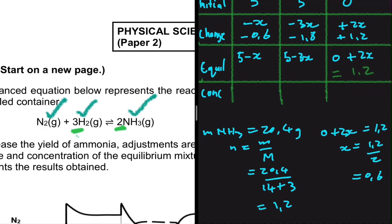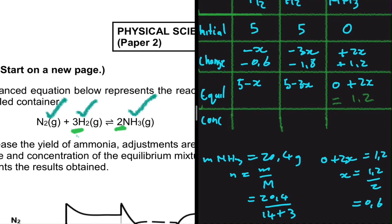So ammonia has plus 1.2, hydrogen has minus 1.8, and nitrogen has minus 0.6, since x equals 0.6. The number of moles at equilibrium of nitrogen gas — 5 minus 0.6 — is 4.4. For hydrogen gas, 5 minus 3(0.6) gives us 3.2. And for ammonia, we already know we have 1.2 at equilibrium.